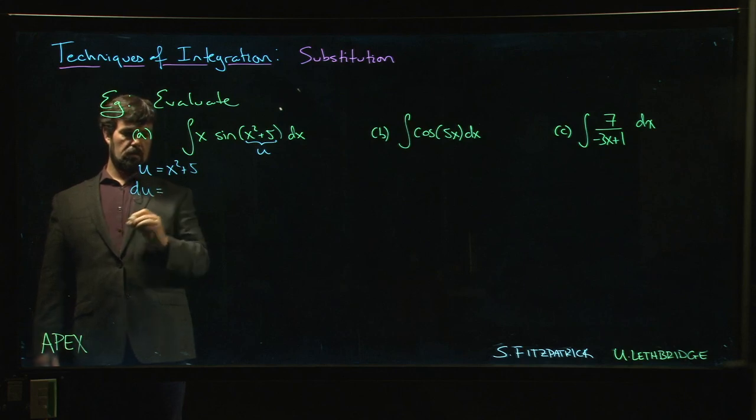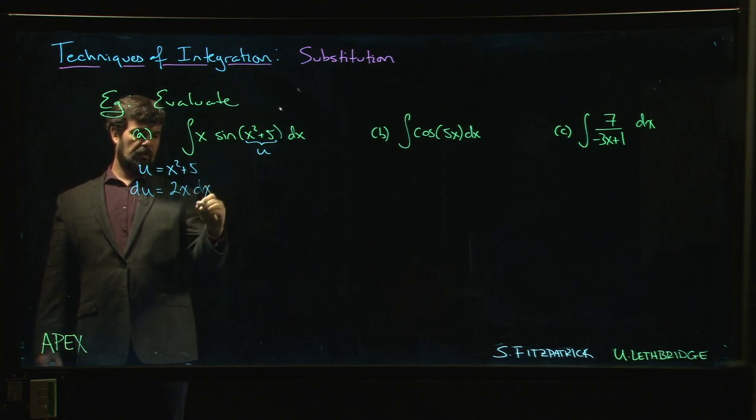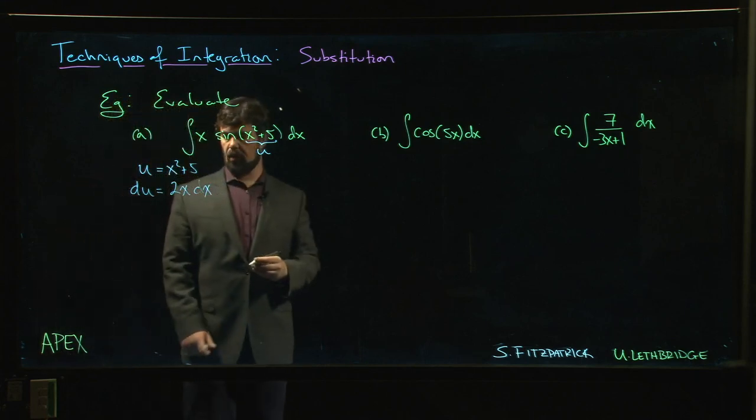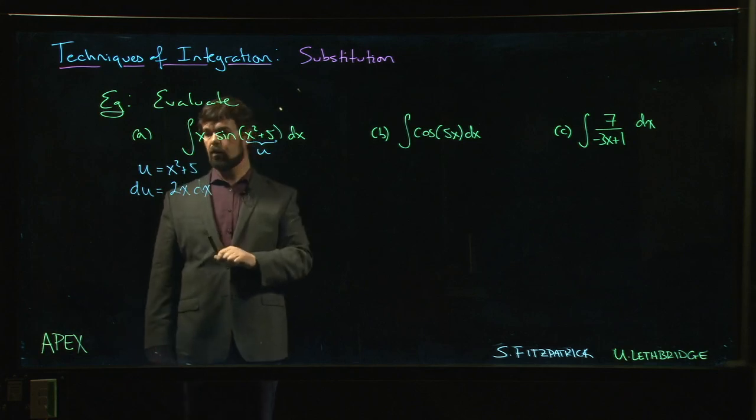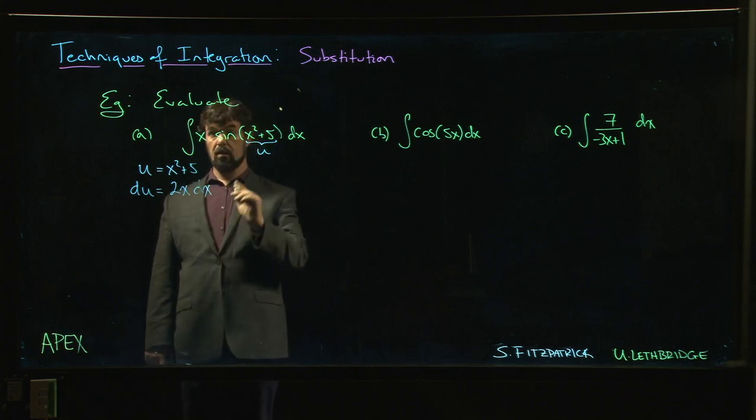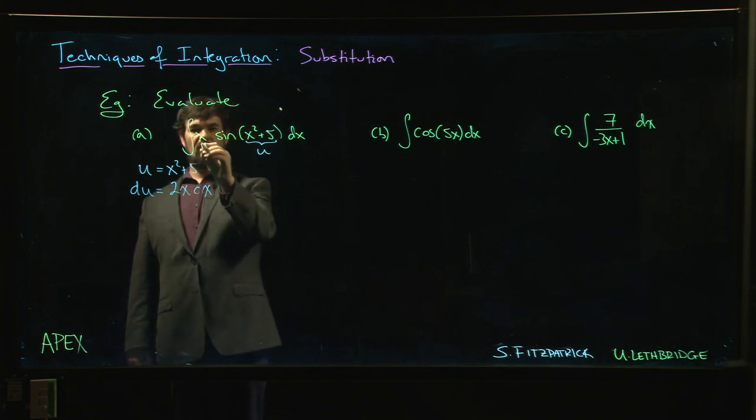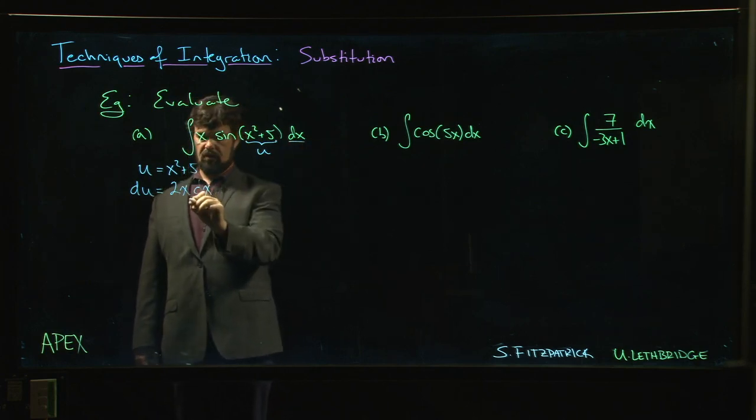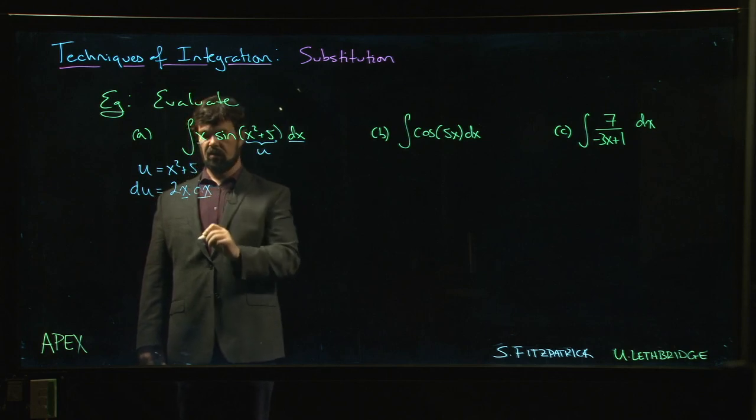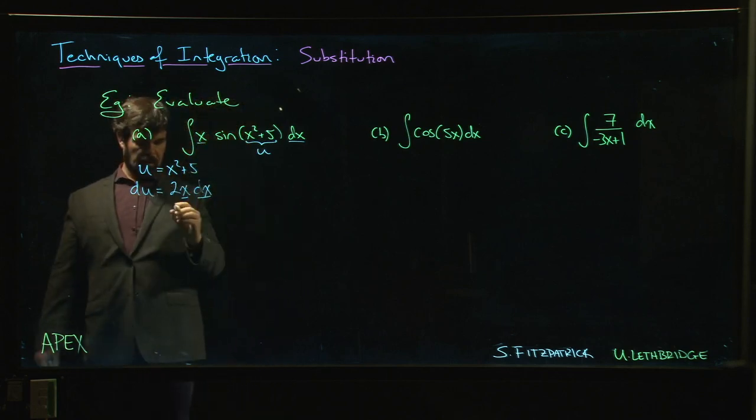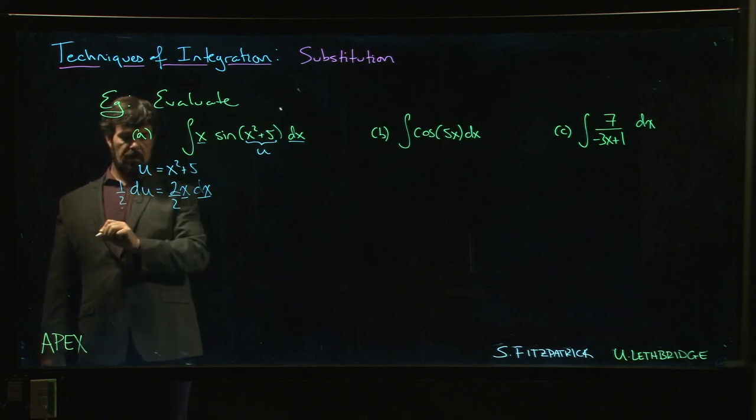The derivative of x squared is 2x, derivative of five is zero, so we have 2x dx. Then we come back and say, do I have 2x dx? No, we don't. We have x dx but not 2x dx. So we say okay, x dx is here, so what do we have to do? We've got to get rid of the two—divide by two, divide by two.